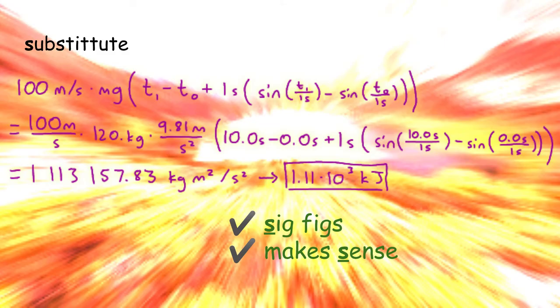So we can just plug in the given values and it seems that the earth has done 1.1 × 10³ kilojoules of work on the sheep. The sig figs are correct and the answer makes sense. I hope this added knowledge on line integrals will aid you on your journey through life. Thanks.